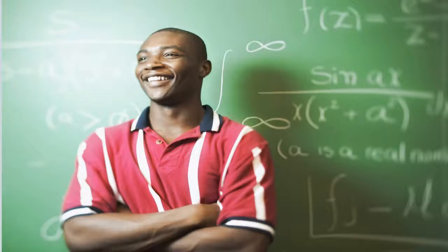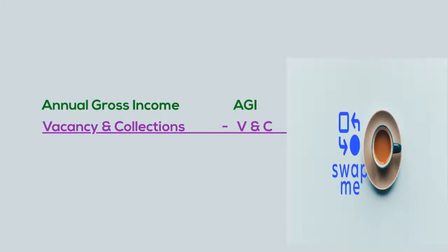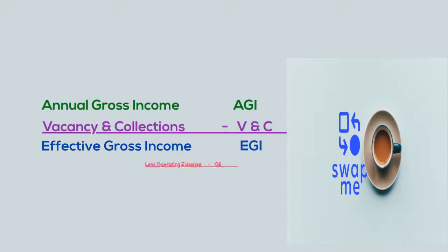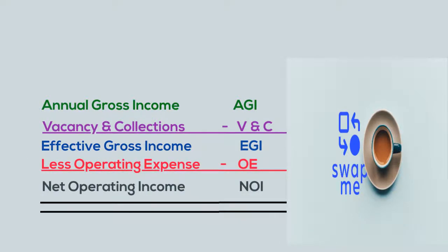When solving these problems, it helps to look at it from a vertical perspective. Annual gross income minus vacancy and collections equals the effective gross income, less the operating expenses, which equals the net operating income.